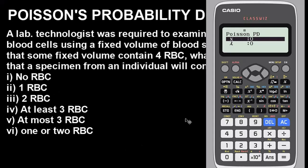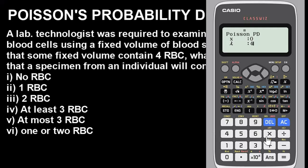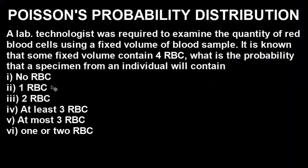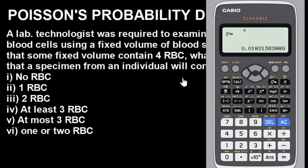Our lambda is 4, because the question states that some fixed volume contains four red blood cells. Lambda is the expected value and it stays constant for all sub-questions. Being able to identify the respective values correctly is very important — if you misplace them you will get the wrong answer. Press equals and you'll get the probability of the specimen from an individual with no red blood cell.